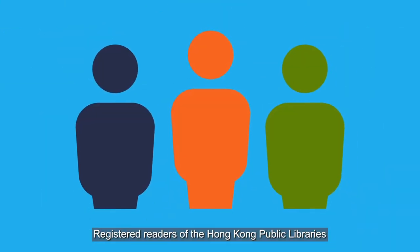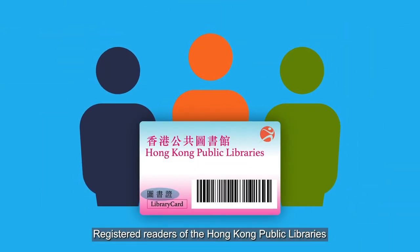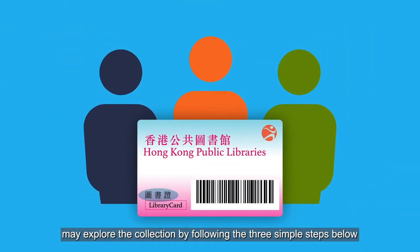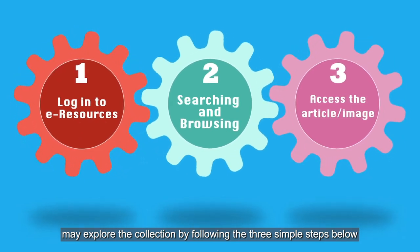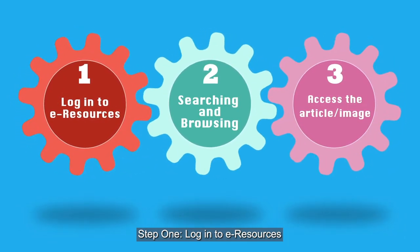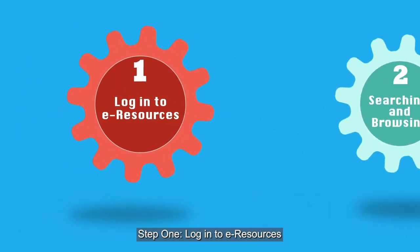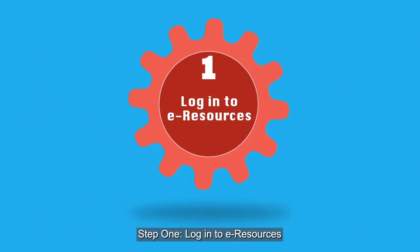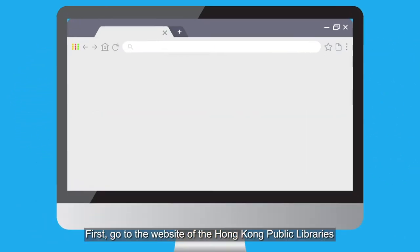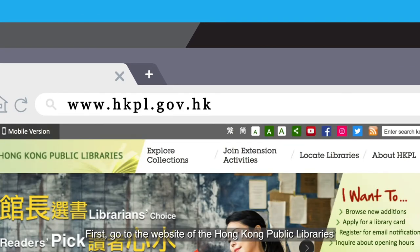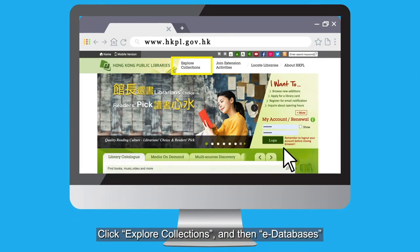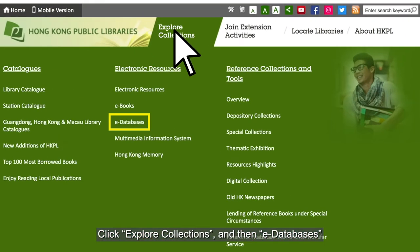Registered readers of the Hong Kong Public Libraries may explore the collection by following the three simple steps below. Step 1: Log in to e-resources. First, go to the website of the Hong Kong Public Libraries, click Explore Collections, and then e-databases.